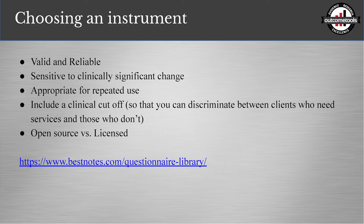Choosing an instrument: I have a lot of companies who come to me saying they want to build their own tool. It's great that you're thinking about what you want to measure, but for accreditation purposes it's best to use a valid and reliable tool — the Joint Commission actually requires that you use one — so you can compare populations against each other. Usually a valid and reliable tool has benchmarking so you can show how your clients stack up against other clients, and it needs to be sensitive to clinically significant change, meaning it shows you whether a client is getting better or worse.